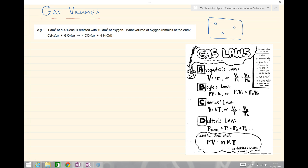What that means is that if we have the same conditions of temperature and pressure and the same number of moles, then we can work out the moles given an equation. We'll look at this example here. We've got one decimetre cubed of but-1-ene, an alkene with four carbons, and ten decimetres cubed of oxygen. What volume of oxygen remains at the end?